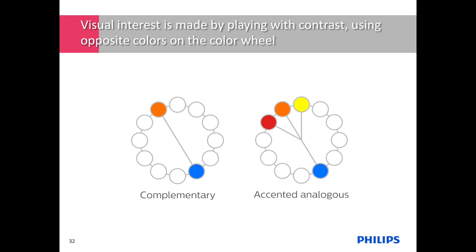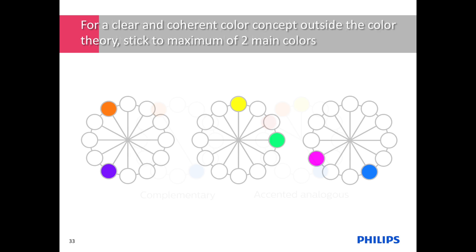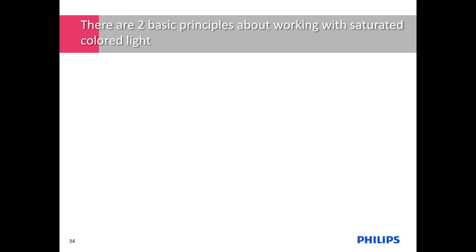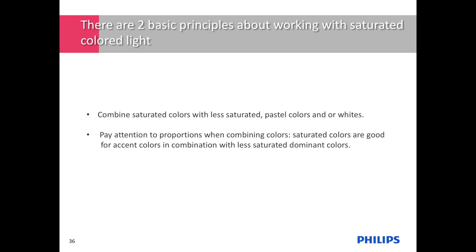To make an accent in an analogous harmony or to play with color contrast, use a color on the opposite side of the wheel — this way you automatically get a warm-cold contrast. If you want to make a combination of your favorite colors outside this color harmony theory, make sure to stick to two main colors for a more solid concept. When working with saturated colored light, for a more sophisticated result, combine saturated colors with less saturated pastel colors and/or whites. Pay attention to proportions — saturated colors work best as accent colors in combination with less saturated dominant colors.